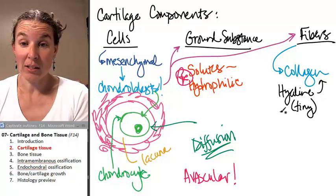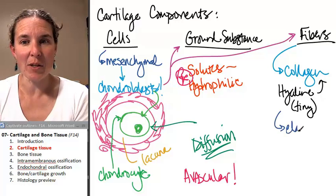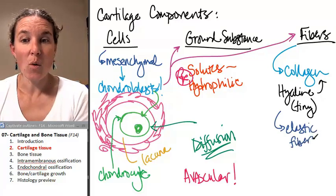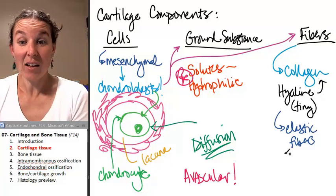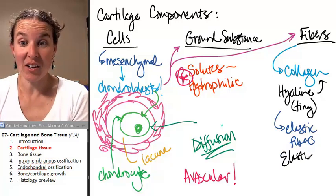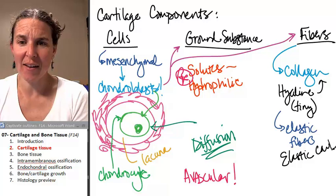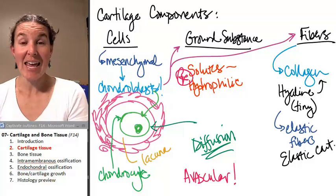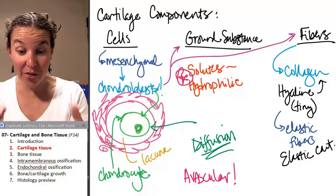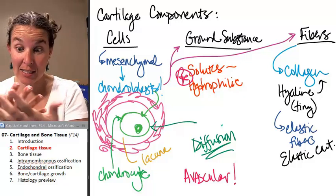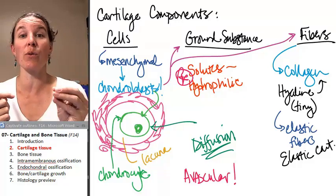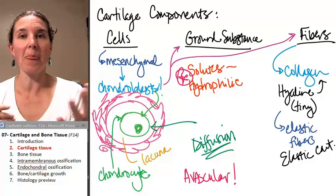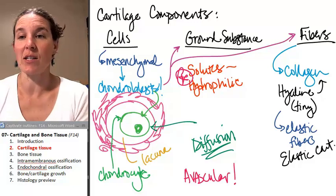Some cartilage has elastic fibers. What kind of cartilage do you think that would be? Elastic cartilage. Don't you love it when it's like that? How easy is that? If you see those little, thin, glassy, shattery looking fibers running through your cartilage, then you know that you have elastic cartilage.